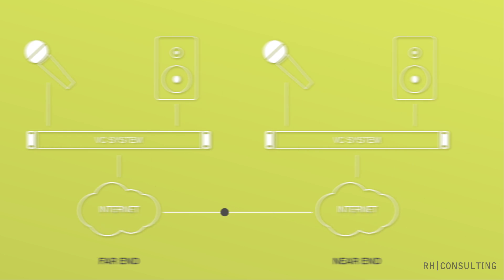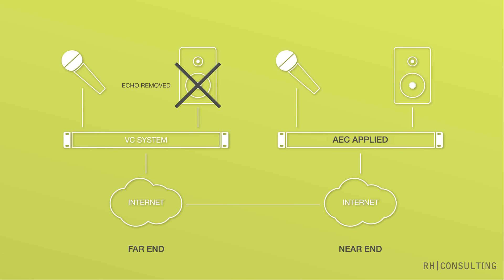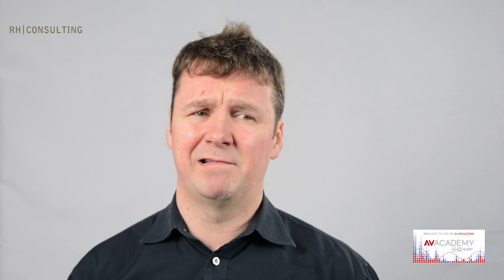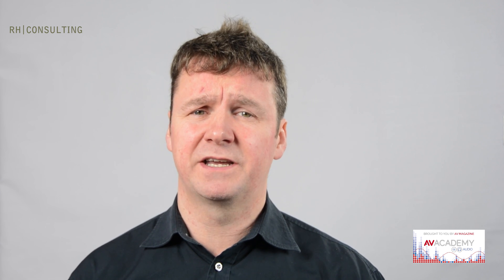The echo cancellation circuitry examines the sound going into the microphone and compares it with the sound coming from the far end. It then cancels out the sound that it detects in both signals, as that can only be the sound from the far end. This means only the sound of the person speaking into the microphone is mixed with the other microphones and sent to the far end. The microphones in the system at the far end also need echo cancellation.